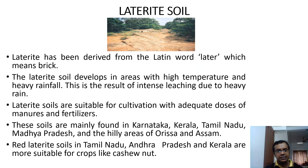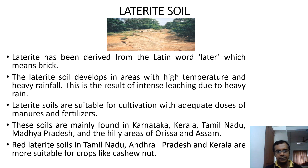The fourth classification is the Laterite soil. The name Laterite is derived from the Latin word 'later' which means brick. Laterite soil develops in areas with high temperature and heavy rainfall. This is the result of intense leaching due to heavy rain. Laterite soils are suitable for cultivation with adequate doses of minerals and fertilizers. These soils are mainly found in Karnataka, Kerala, Tamil Nadu, Madhya Pradesh, and the hilly areas of Odisha and Assam. Red Laterite soils in Tamil Nadu, Andhra Pradesh, and Kerala are more suitable for crops like cashew nut.